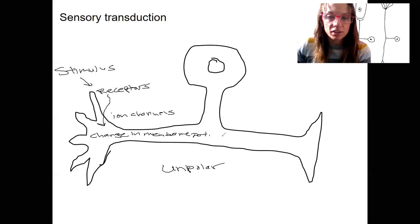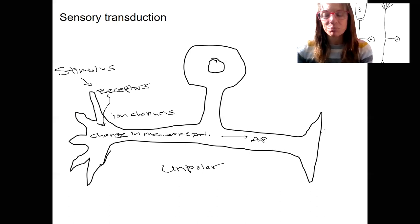Ultimately, we're going to have an action potential that's going to allow this information to travel to the brain. So this is what's common with all sensory transduction. We'll see variants and the complexities, mostly with vision as our example of complexity.